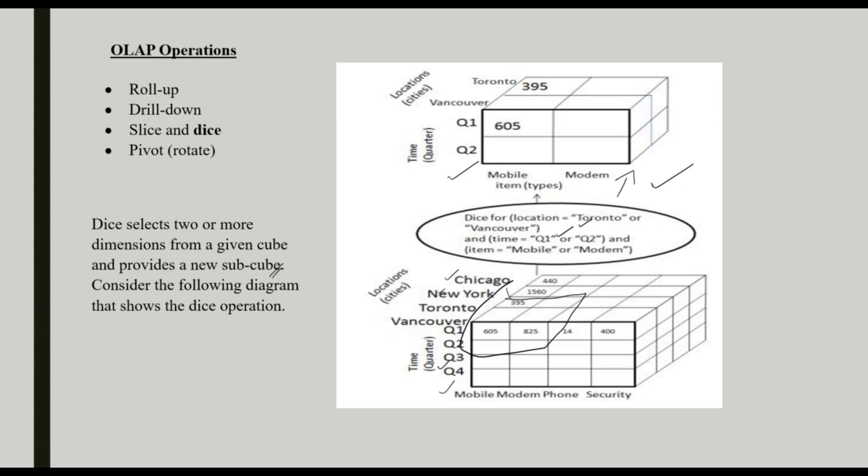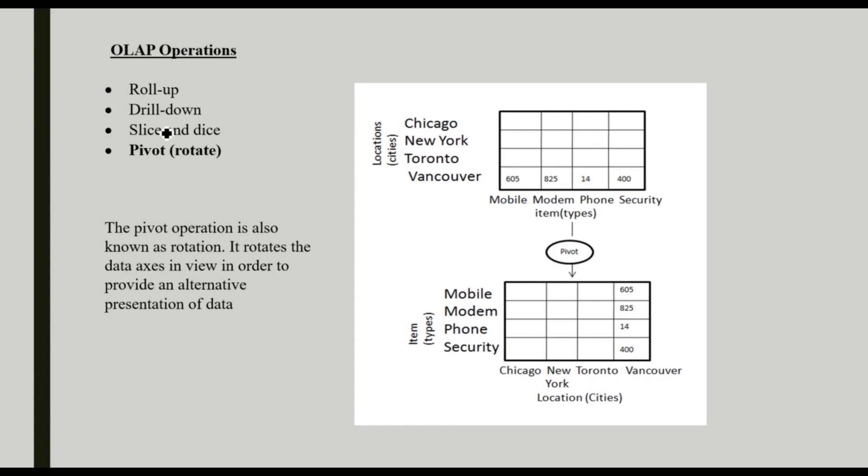Next is pivot, that is rotate. The pivot operation is also known as rotation. It rotates the data axis in a view in order to provide an alternative presentation of data. Sometimes we want to view the data in another fashion or another axis. We can rotate the data. See, here the location is in this axis and the item is in this axis. Here we are just rotated for a more clear view or some presentation of data. That is the rotate operation.